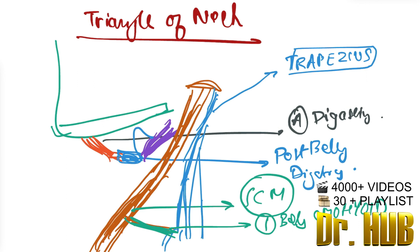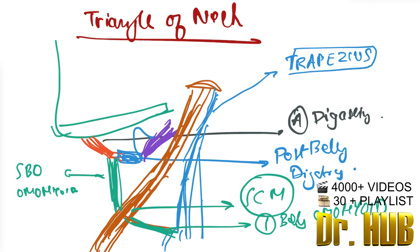And on the other hand there is a superior belly of the omohyoid. This is the superior belly of the omohyoid. And why is it called omohyoid? Because there is a presence of the hyoid bone — this is the hyoid bone.